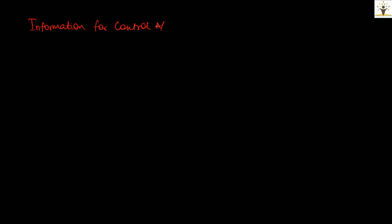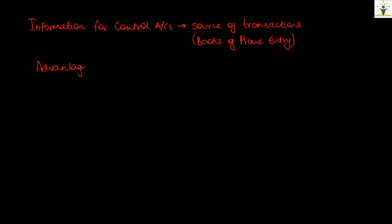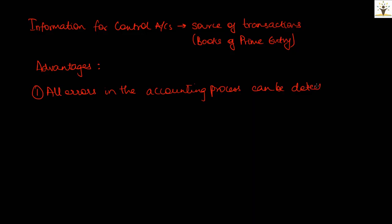Instead, the control account should be prepared by extracting transactions directly from the source of transaction — in other words, directly from the books of prime entries. Taking information directly from the books of prime entries will have two advantages. Firstly, all errors committed in the accounting records including errors in the daybooks and in posting transactions to the ledger will be indicated by the control account. Secondly, it is much easier to extract information from books of prime entries as totals of transactions for the period are already available as part of the records.